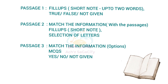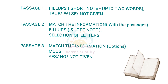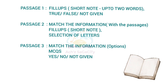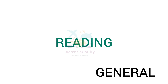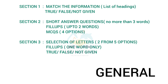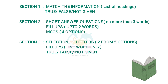Moving on to the last passage, you can expect match-the-information questions where options are given in a box and you match according to the question — for example, matching a writer's name with their dialogue. Along with that, MCQs and yes/no/not given type questions. These three question types are expected in Passage 3, and this section will also be easy to moderate level. Overall, the academic reading is easy to moderate.